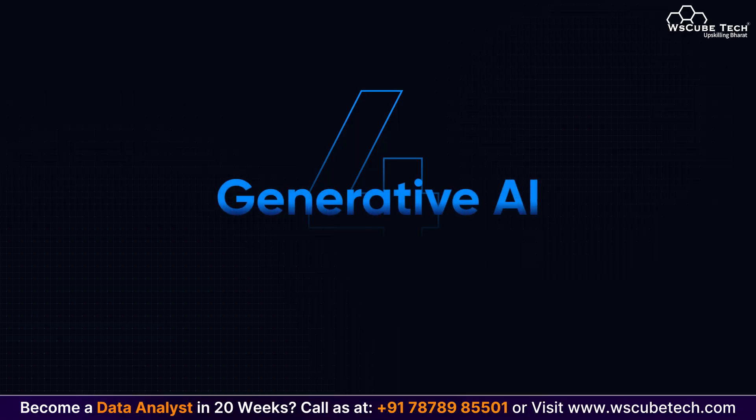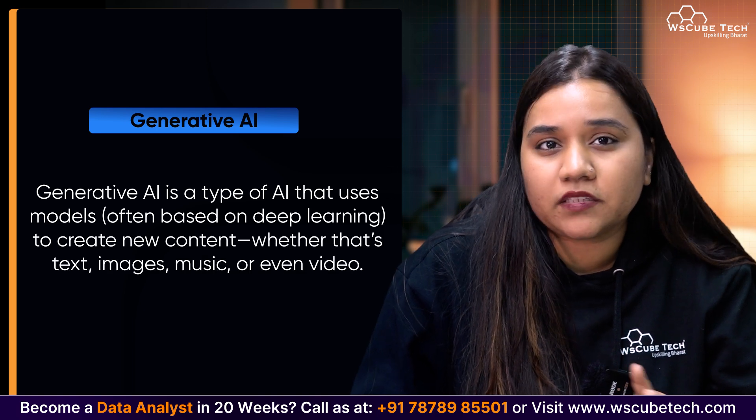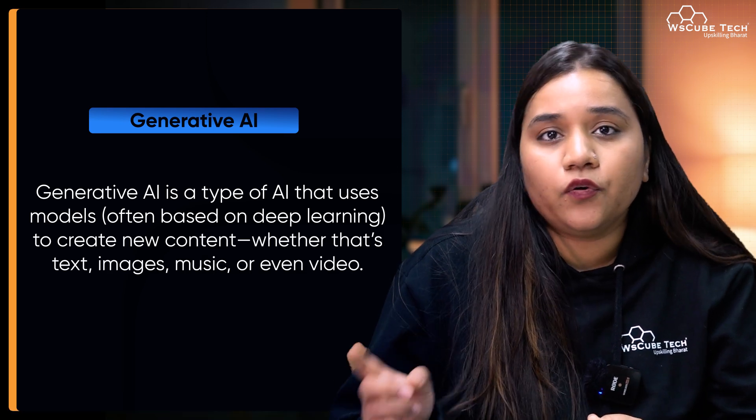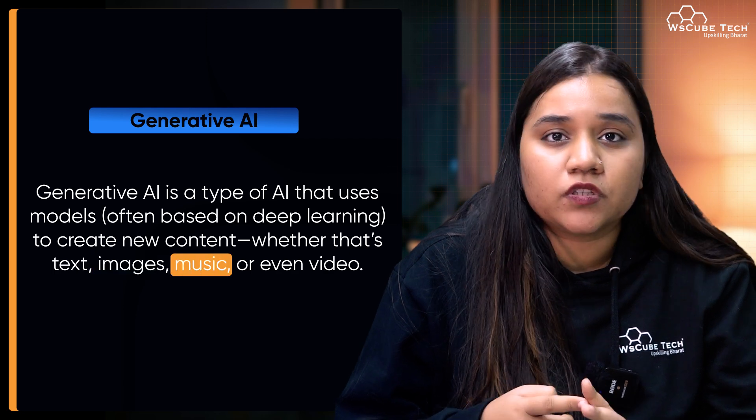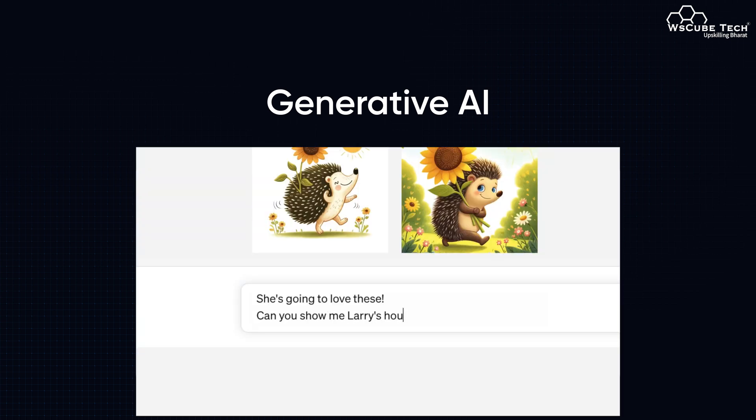Lastly, we have generative AI. Generative AI is a type of AI that uses models — often based on deep learning — to create new content, whether it's text, images, music, or even video. For example, tools like ChatGPT generate human-like text, and platforms like DALL-E generate images from simple text descriptions. Generative AI goes beyond analyzing data — it's about creativity and allowing machines to produce new, original work that can inspire and entertain.